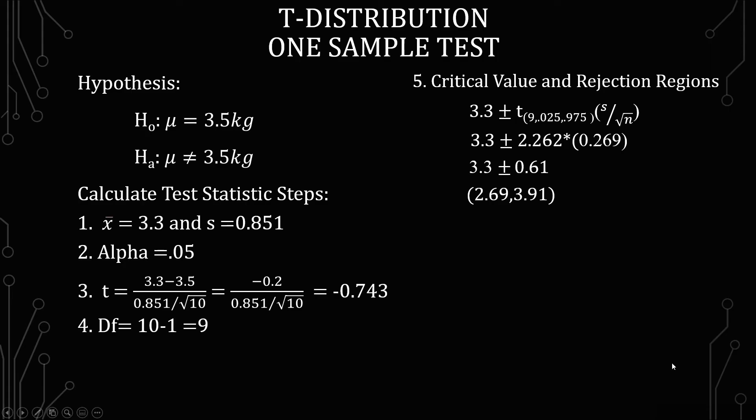Now that we have our critical value, we're going to get our rejection regions. We have the sample mean, 3.3 plus or minus the critical value times the standard deviation divided by the square root of n. So you have 3.3 plus or minus 2.262 times 0.269, which yields 3.3 plus or minus 0.61, which gives you a range of 2.69 to 3.91. If 3.5 is in between that range, we don't reject the null hypothesis. If it's not within that range, we reject the null hypothesis. And so we know that between 2.69 and 3.91, 3.5 is in between there, so we fail to reject the null hypothesis.